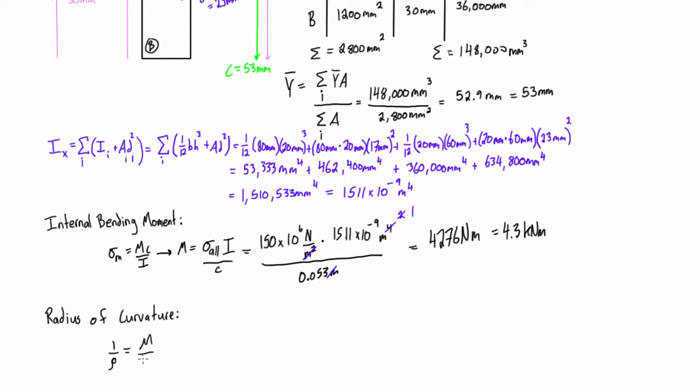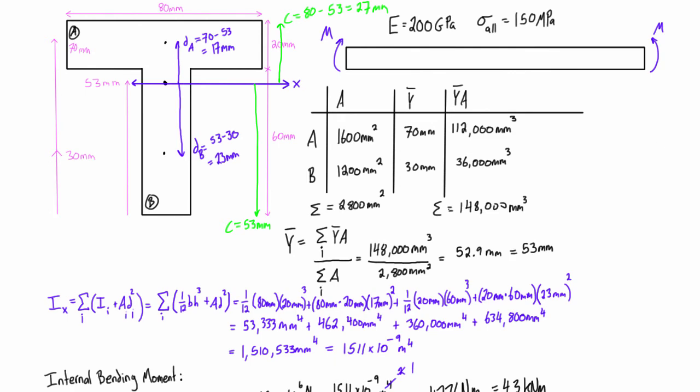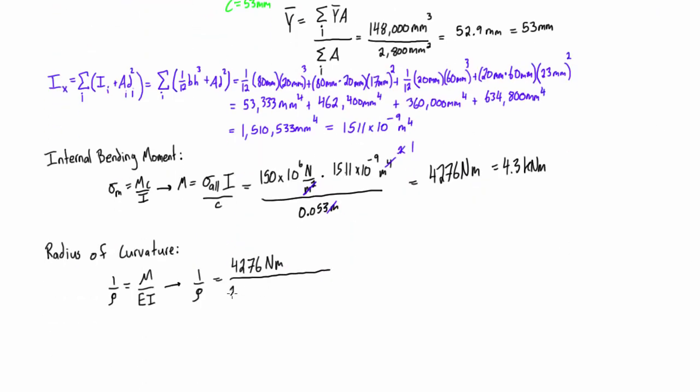We do that using the expression: 1 over rho equals m over E times I. We pretty much know all this stuff, so let's plug in what we know. For 1 over rho, the moment that we're dealing with here, the largest moment that we're allowed to apply, is 4276 newton meters. This is all over E times I. E was given to us up here, we have 200 gigapascals, so that's 200 times 10 to the 9 pascals, which is newtons per meter squared. Our I value is 1511 times 10 to the minus 9 meters to the power of 4.